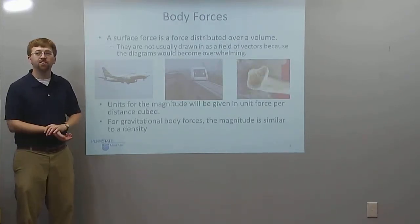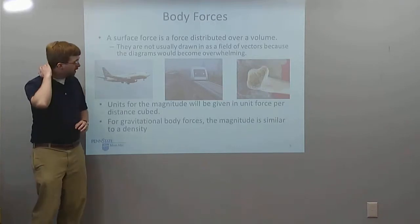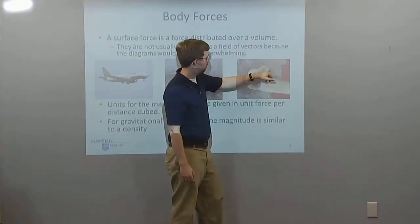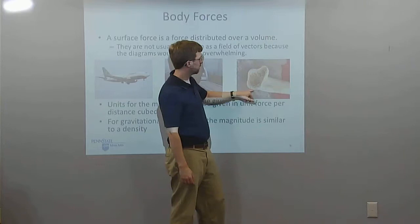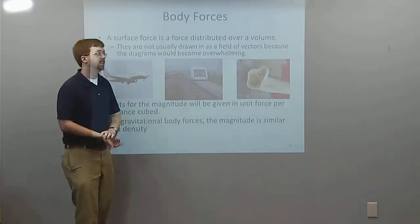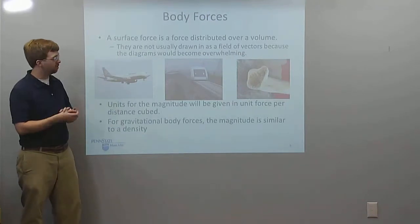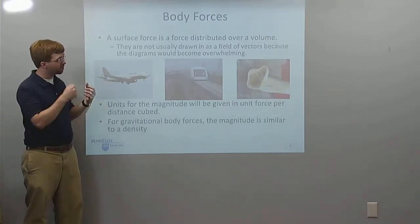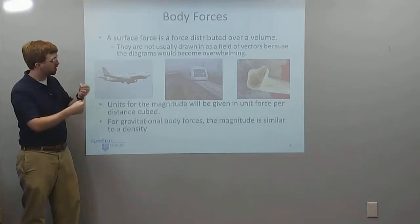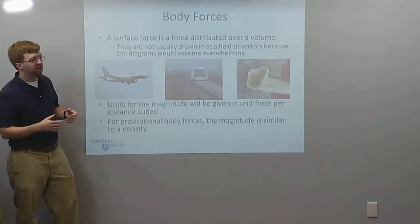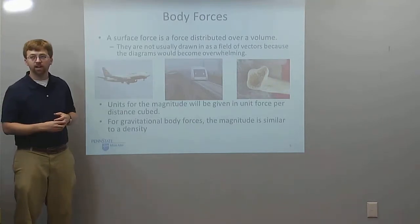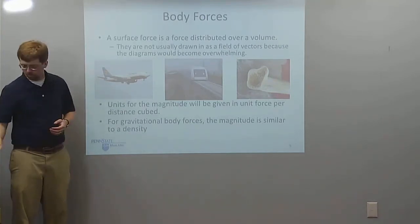That density might change with the material. Here we've got a cross section of a bone — there's more dense material around the edge and less dense, more porous material in the middle. So the gravitational force on this bone would be pulling down more strongly on the denser edges, with a smaller magnitude force acting on the porous center.